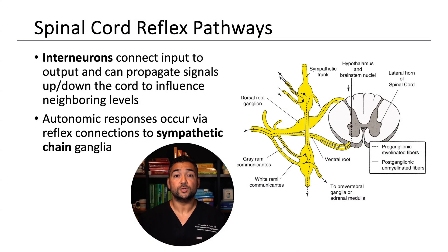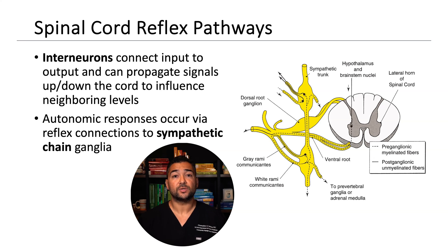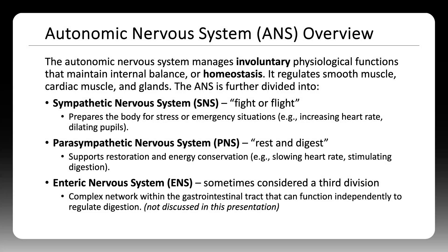Reflex circuits don't always stay local. Interneurons connect afferent and efferent neurons and can relay signals across multiple levels. These circuits also link into autonomic pathways, particularly the sympathetic chain, contributing to visceral involvement.